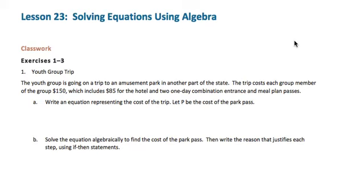Exercise 1. The youth group is going on a trip to an amusement park in another part of the state. The trip costs each group member $150, which includes $85 for the hotel and two one-day combination entrance and meal plan passes.